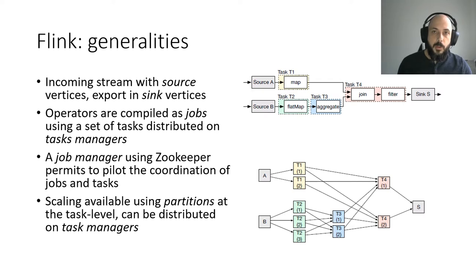Events can then be distributed to the different task managers depending on the chosen event keys. We can see on the example on the right, different number of partitions generated for each task. For instance, for the task T2, we have three partitions in this case.